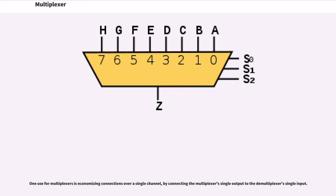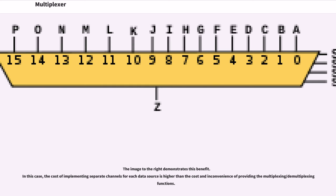One use for multiplexers is economizing connections over a single channel by connecting the multiplexer's single output to the demultiplexer's single input. The image to the right demonstrates this benefit. In this case, the cost of implementing separate channels for each data source is higher than the cost and inconvenience of providing the multiplexing/demultiplexing function.